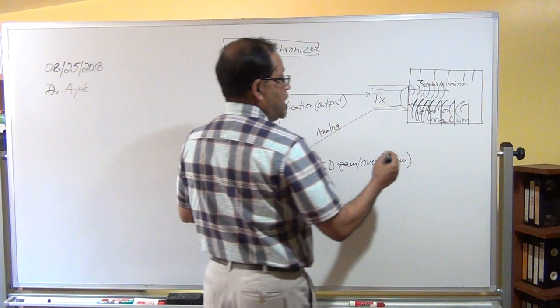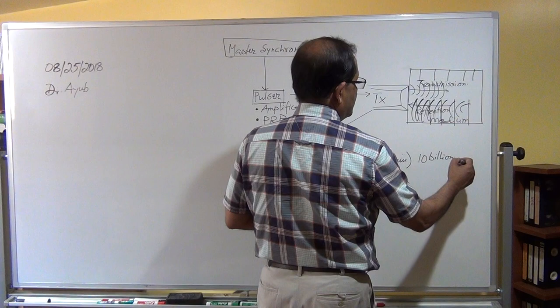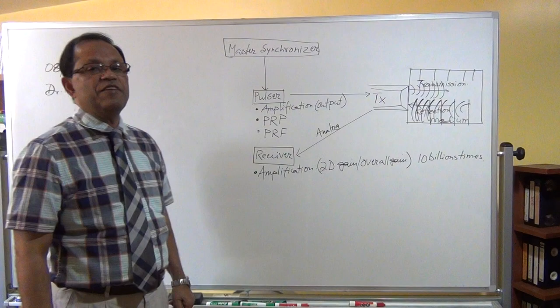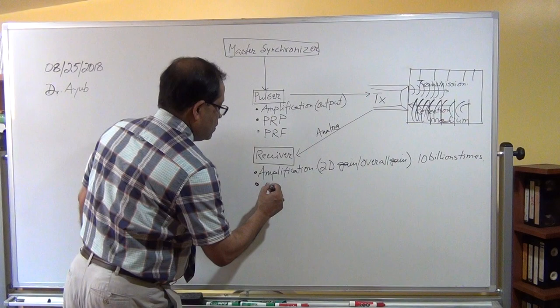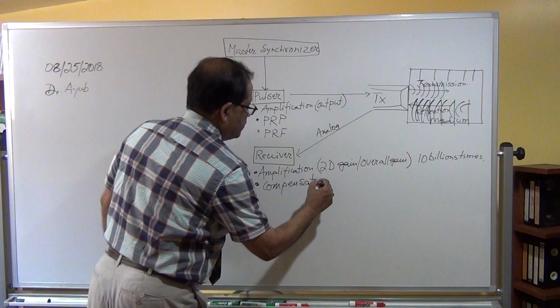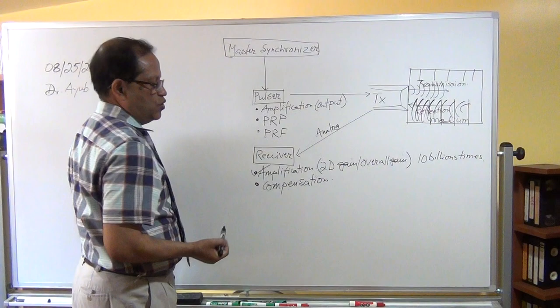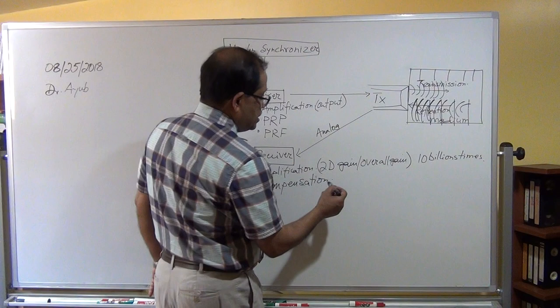Received amplification can be amplified up to 10 billion times — 60 dB, 200 dB — you can amplify significantly. After amplification comes compensation. Amplification is controlled by the sonographer, and compensation is controlled by the sonographer too. You can perform compensation using TGC (time-gain compensation) and also by overall gain.